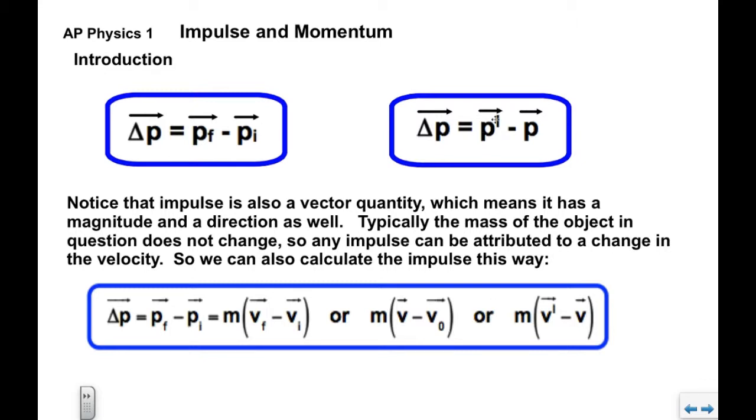Or, with our new notation prime and unprime, we can use mass times V prime minus V. V prime is the velocity after the interaction and V is the velocity before. So again, you can look at this as final minus initial. All of these are equivalent impulse formulas. Please note, none of these appear on the formula sheet.